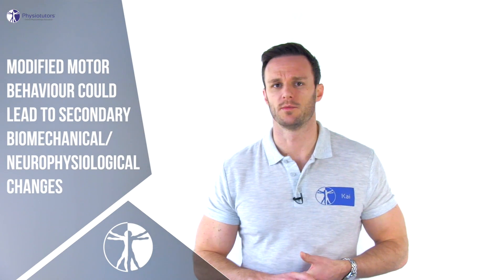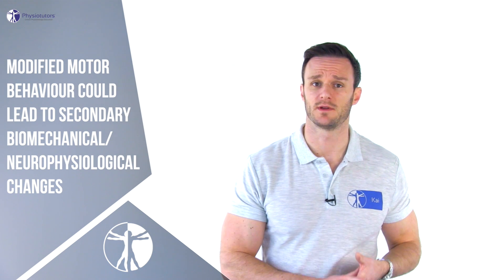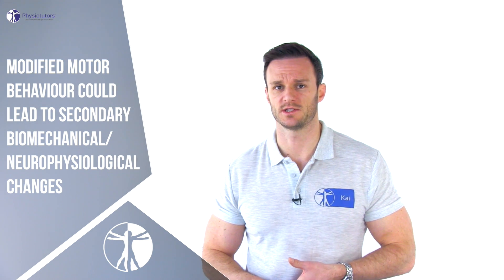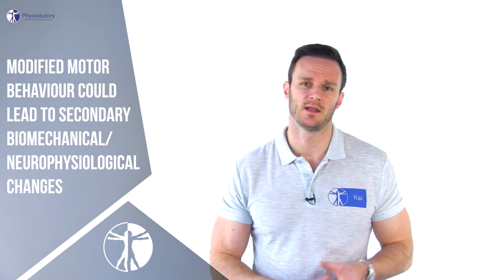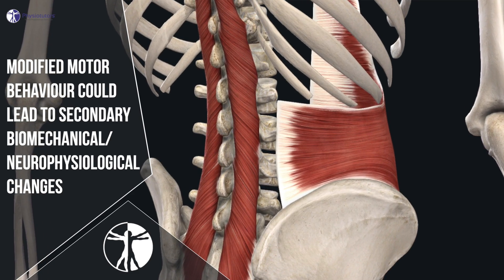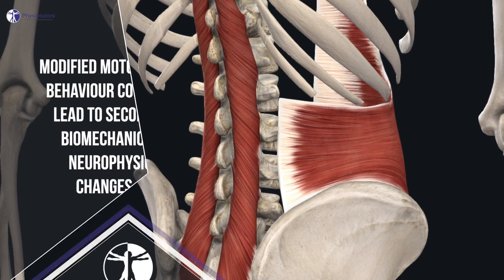The modified motor behavior could lead to secondary biomechanical or neurophysiological changes that prevent return to the pre-pain state. This could be the case in atrophy and fatty infiltrations of the multifidi in low back pain, muscle length, stiffness changes, and increased or decreased muscle strength. If motor adaptations persist, they may become part of the problem for the primary involved tissues or could be responsible for the establishment of secondary changes and sources of nociception.